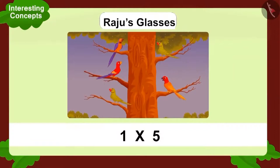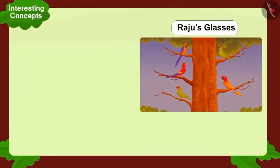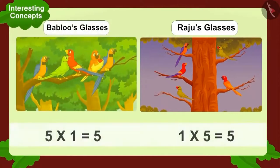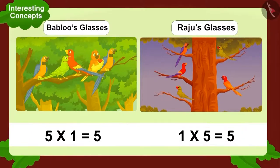Now, let's look at Raju's multiplication. One multiplied by five. Can we write it using addition? No. Why so? Because one multiplied by five is one time five, which gives you five. Raju saw as many birds as Bablu. Both of them saw five birds.